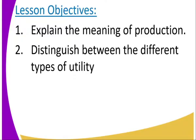Let us look at the lesson objectives. Today we are going to look at the definition of production, then give the different types of utilities. By the end of the lesson, the learner should be able to explain the meaning of production, and number two, explain the four types of utility.